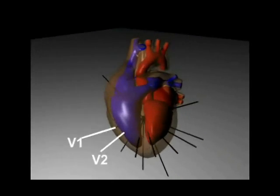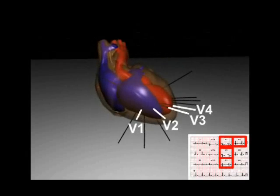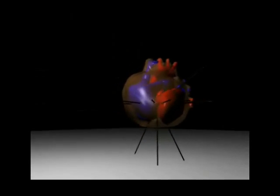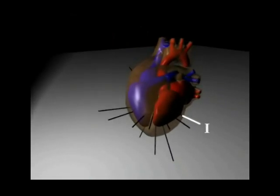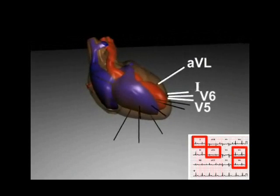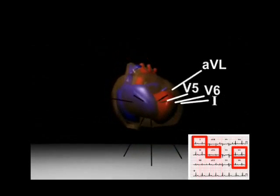The chest leads V1 to V4 examine the anterior surface of the ventricles and the septum, a region supplied by the left anterior descending artery. While leads 1, AVL, V5 and V6 examine the left lateral aspect of the left ventricle, a region supplied by the left circumflex artery.